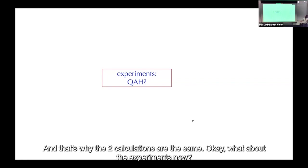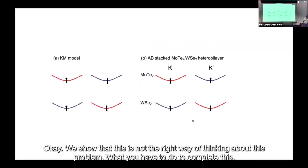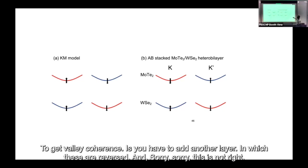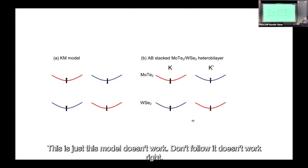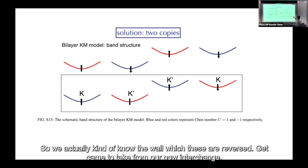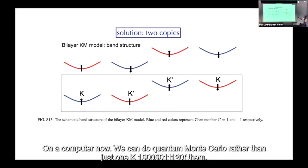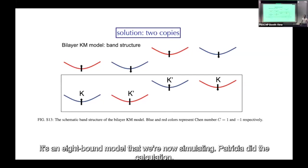Now the experiments. To get valley coherence, you have to add another layer in which the valleys are reversed — K and K' are interchanged. This bilayer system models the experiment, with an electric field coupling the two layers. We can simulate this with quantum Monte Carlo: rather than one Kane-Mele band, we now have two of them — an eight-band model.